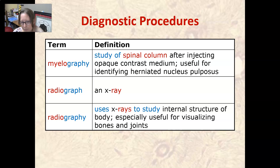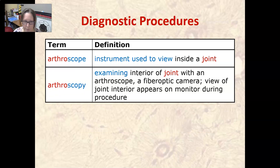A radiograph is an x-ray; radiography is the process — again, an x-ray. It uses x-rays to study the internal structure of the body and is especially useful for visualizing bones and joints. An arthroscope is an instrument used to view the inside of a joint.